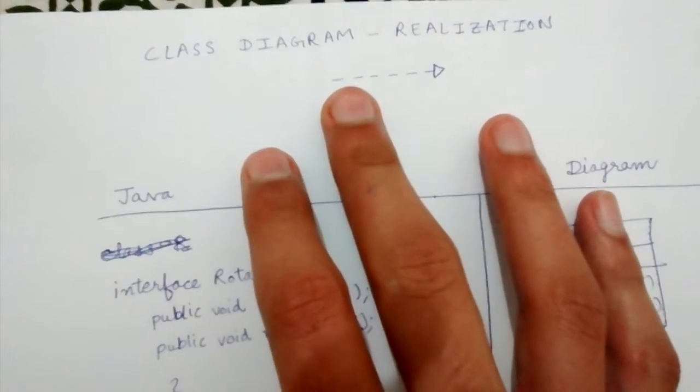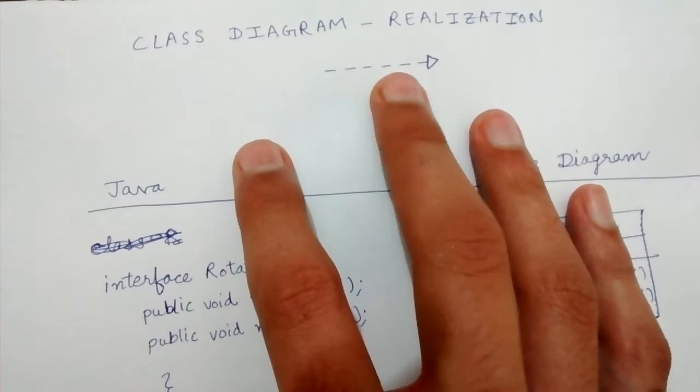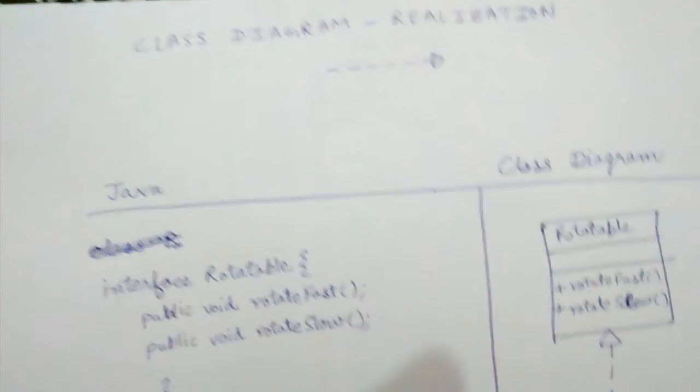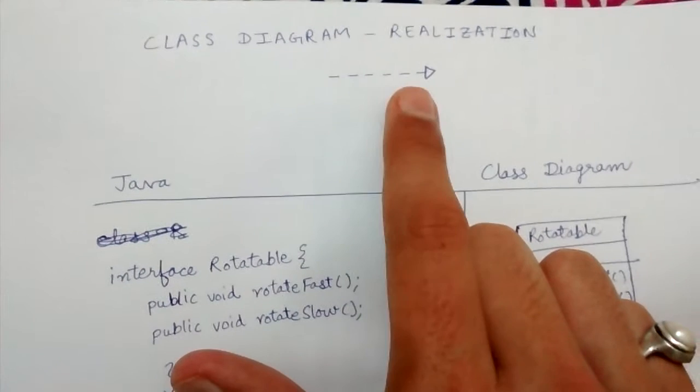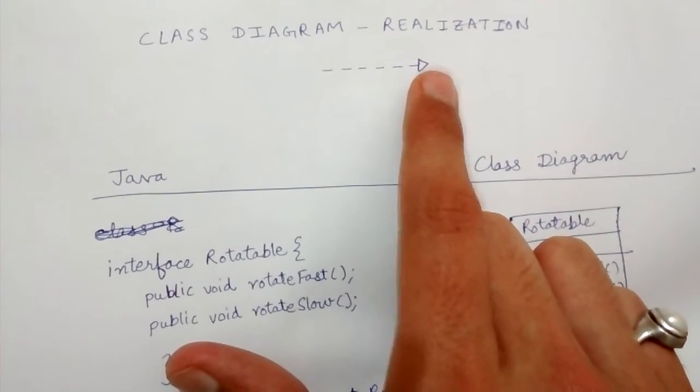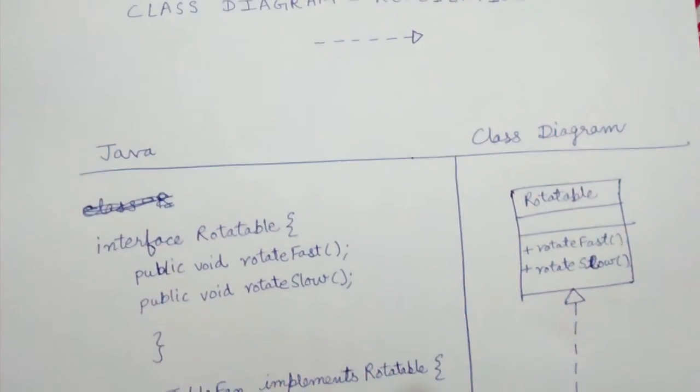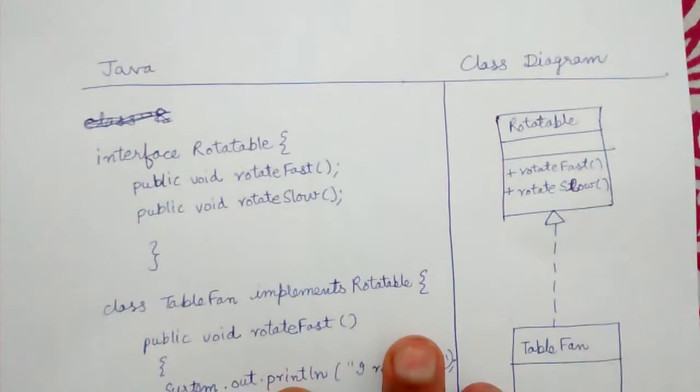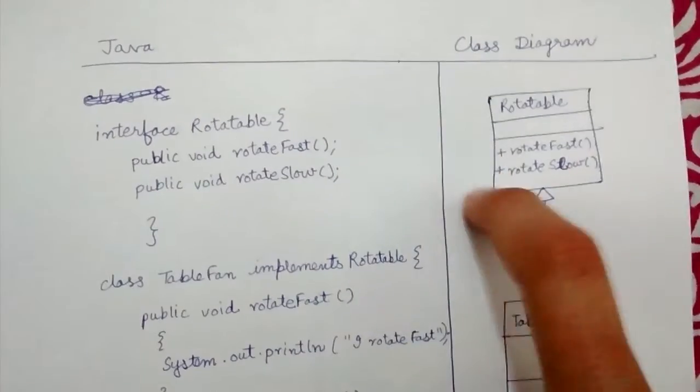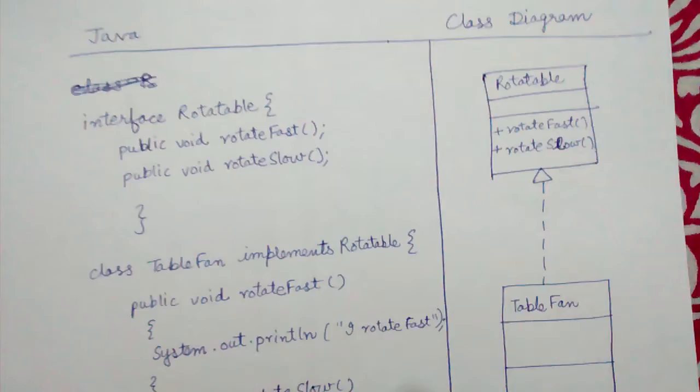It is represented by a dotted line followed by a small triangle at its end. Here also the direction of the arrow is very important, similar to the inheritance relationship we studied in class diagram. The direction of arrow is towards the superclass, that is towards the interface which is being implemented by the class.